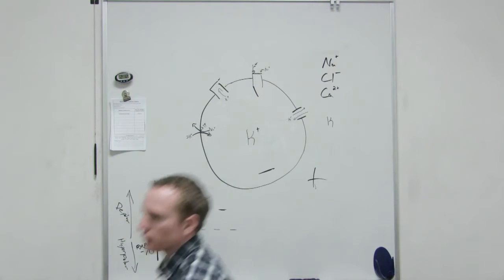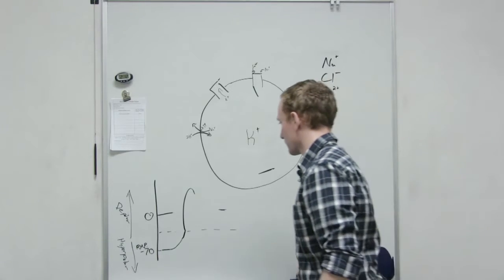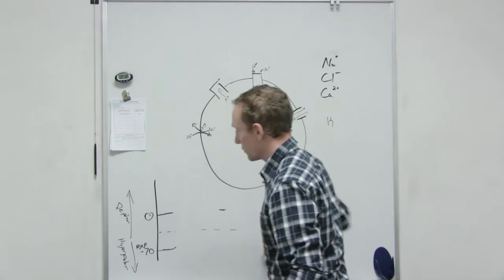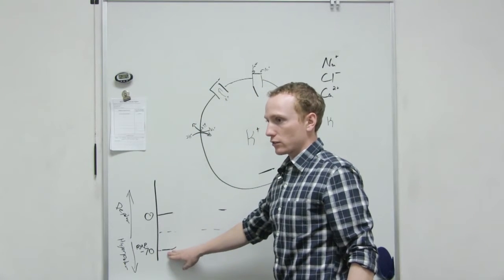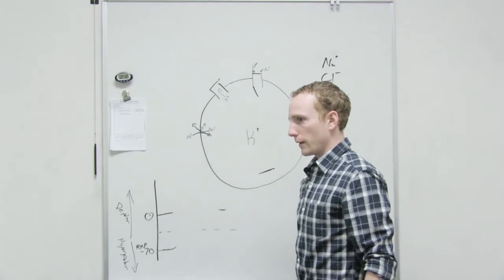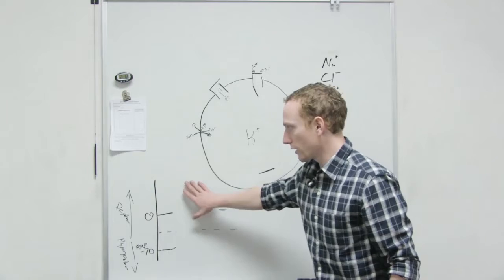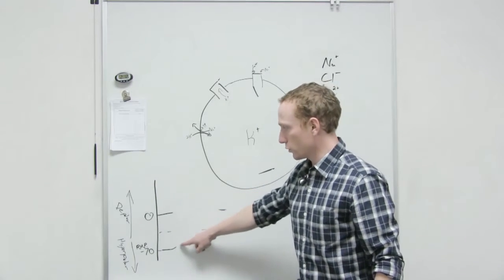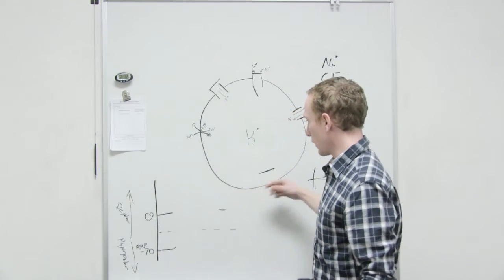That's inside or outside? This is the inside of the cell compared to the outside of the cell. Inside of the cell compared to the zero mark, the outside of the cell.